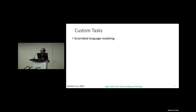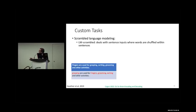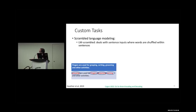They also used custom tasks like scrambled language modeling: in scrambled language modeling, words within a sentence are shuffled. Similarly, in scrambled paragraph modeling, the words within a paragraph are shuffled. These custom tasks allow comparison of how syntactic structure affects the alignment between brain representations and model representations.